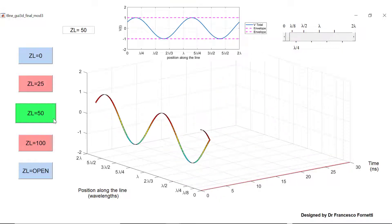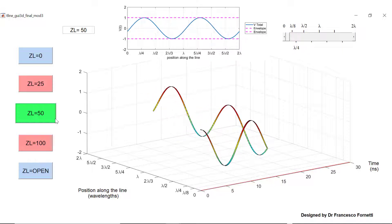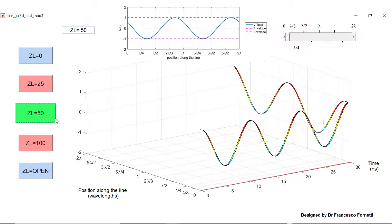Of course, if we match the line, if we terminate it with a load equal in value to its characteristic impedance, in this case 50 ohms, then no matter where we place our high frequency probe, we will always see a sinusoidal voltage of the same amplitude.